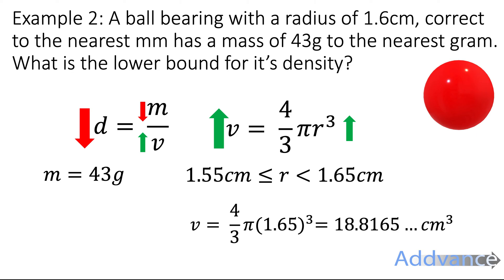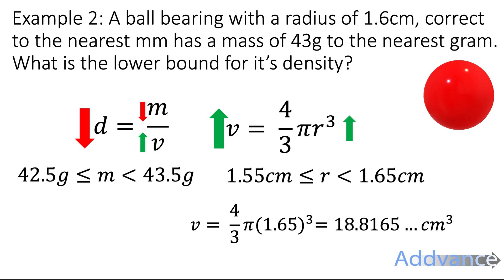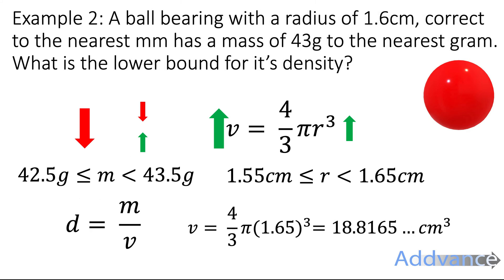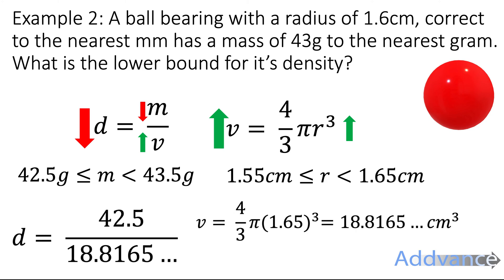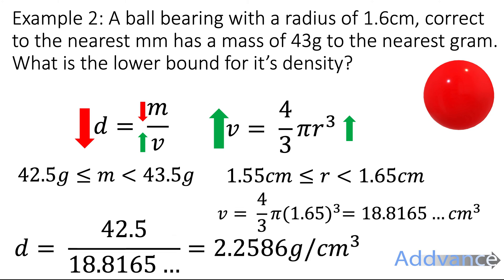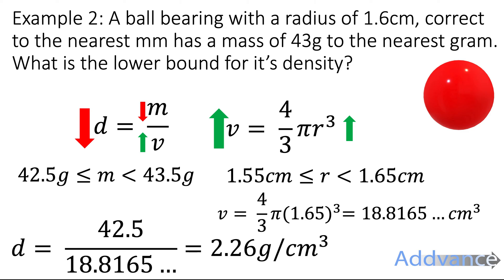We need the mass, which is 43 grams, and it's been rounded to the nearest gram. We half a gram, which is 0.5 grams, and we add or subtract that. The bounds on the mass are 42.5 ≤ mass < 43.5. We want a small mass, so we select the smallest possible mass, which is 42.5, and we select the biggest possible volume, which we've already worked out. Tap this into your calculator again, and you get 2.25 grams per centimetre cubed. You can round that to 2.26 grams per centimetre cubed. That is the final answer.